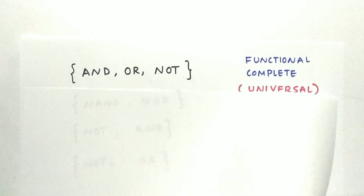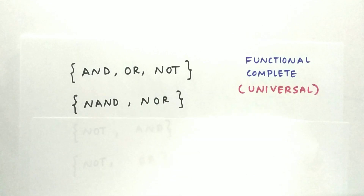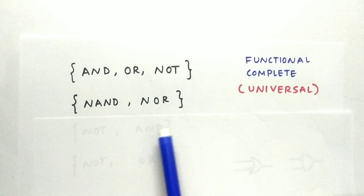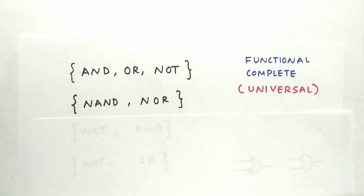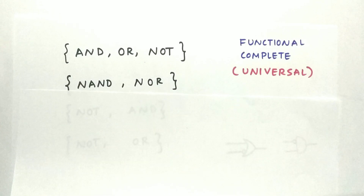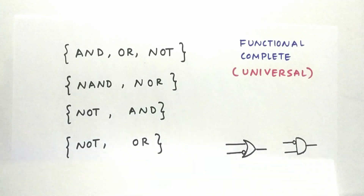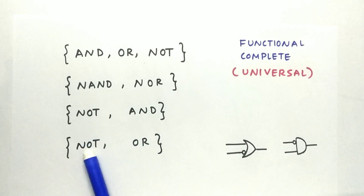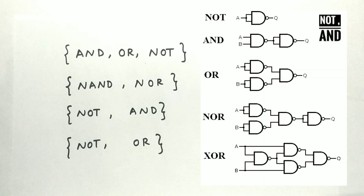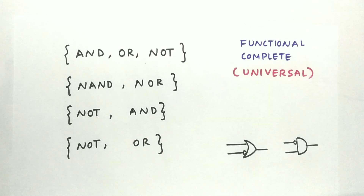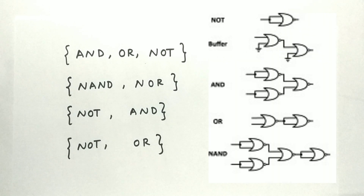Let us look at one more set for a brief idea. Using NAND and NOR gates we are able to perform all the boolean operations, so this set is also called a universally complete set. We have two more sets: NOT and AND, and NOT and OR. By using NOT and AND we are able to achieve all the boolean operations — this is a functionally complete set. Similarly, by using NOT and OR we are able to achieve all boolean operations, so this is also a functionally complete set.